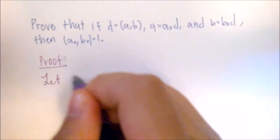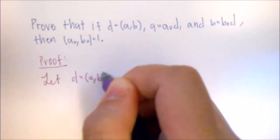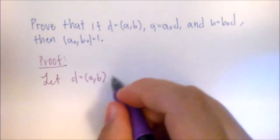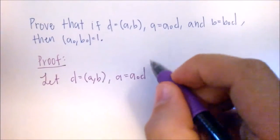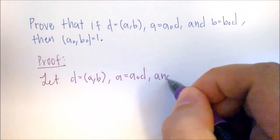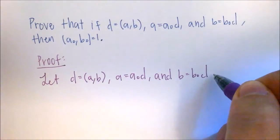Let's let D equal the GCD of A and B. Let A equal A0D, where D is an integer, and B equal B0D. So these are our assumptions.